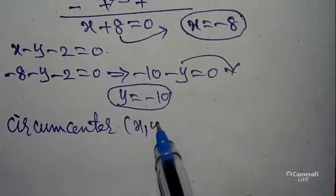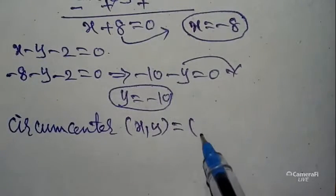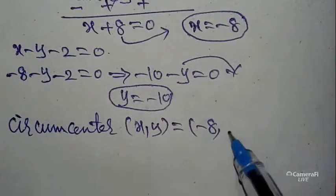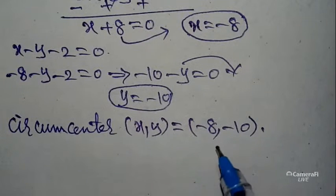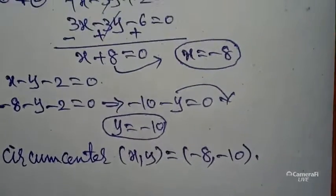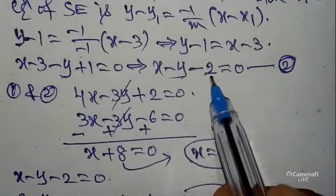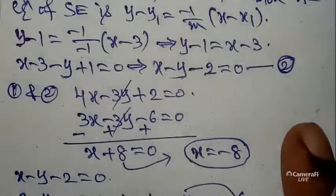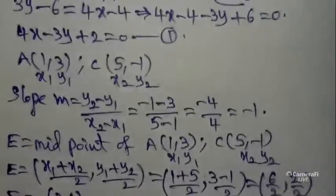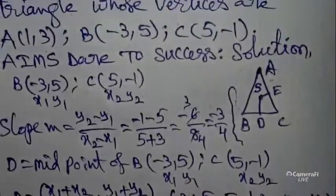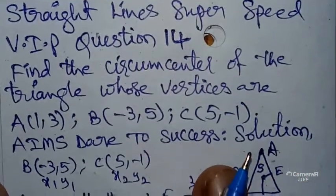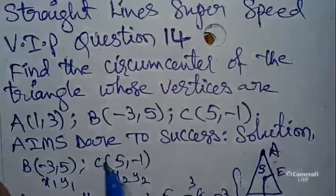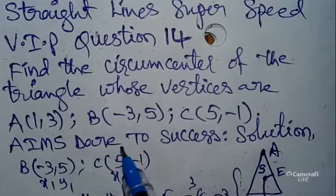Therefore the circumcenter (x, y) = (-8, -10). If you have any doubt, substitute this value into equation 1 or equation 2 and you will get 0 = 0. I hope you understand. If you are satisfied with my explanation, please subscribe to our channel Aims Dare to Success, share with your friends, and like and comment on this video.